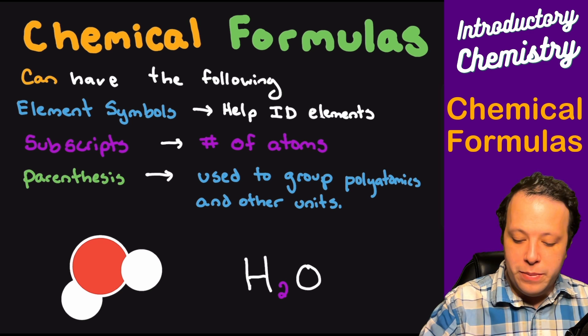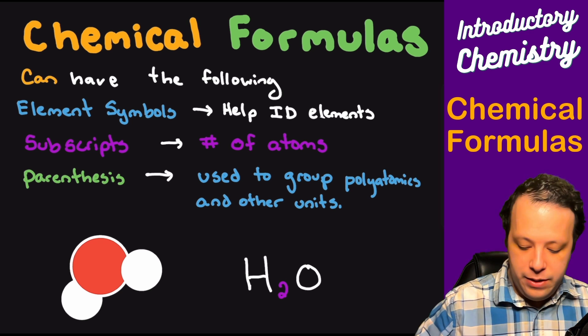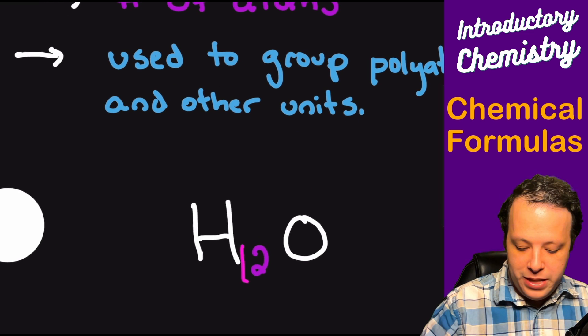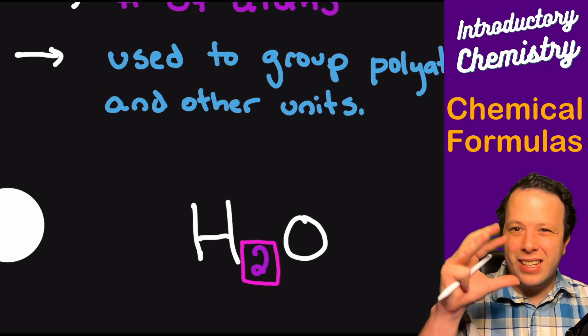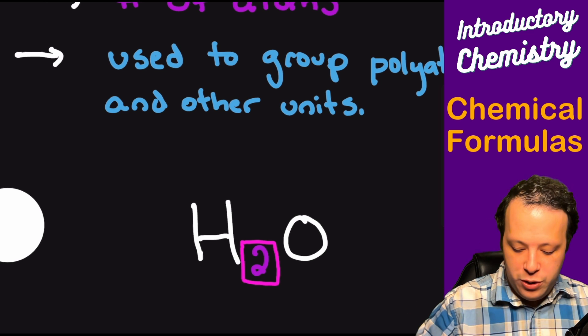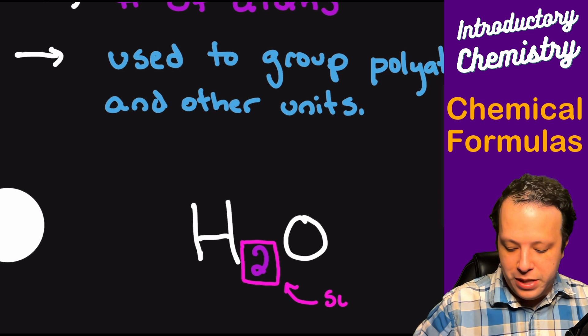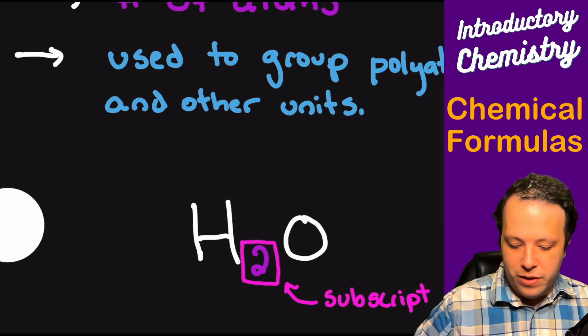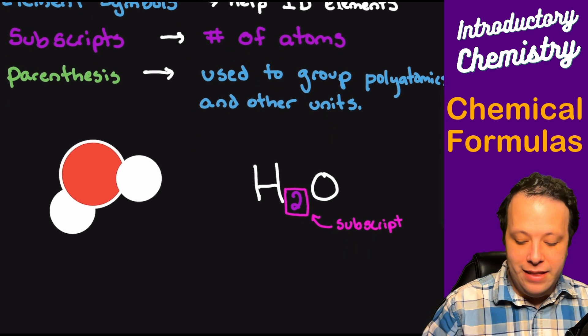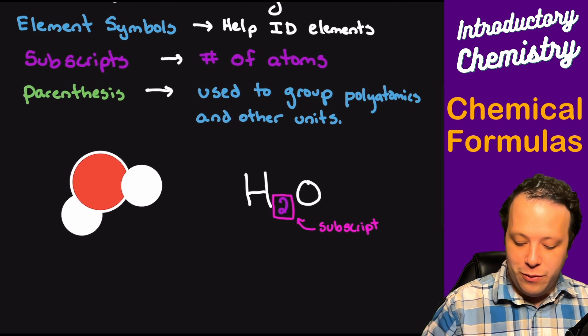After that, we're going to be using subscripts. So what exactly is a subscript? If I have, let's say, water right here, H2O, a subscript is a number that's written on as like a lower font. So this is what we refer to as a subscript. What subscripts are for are telling you the number of atoms that are in this molecule.